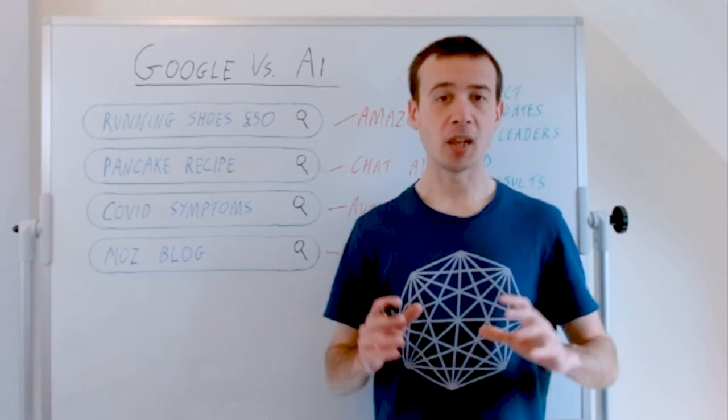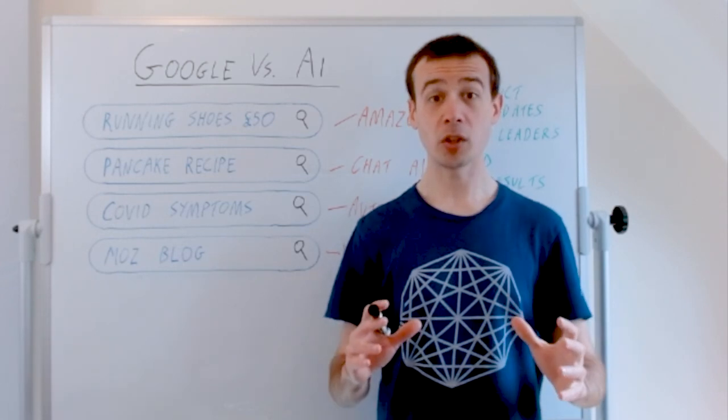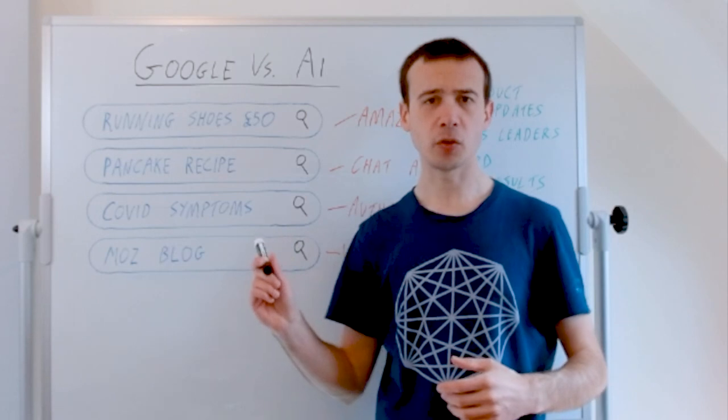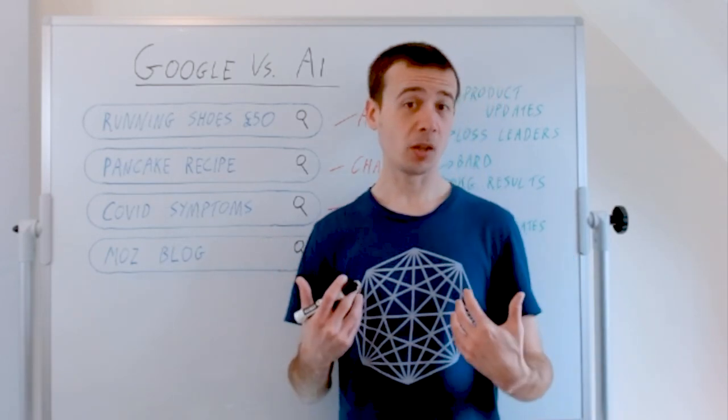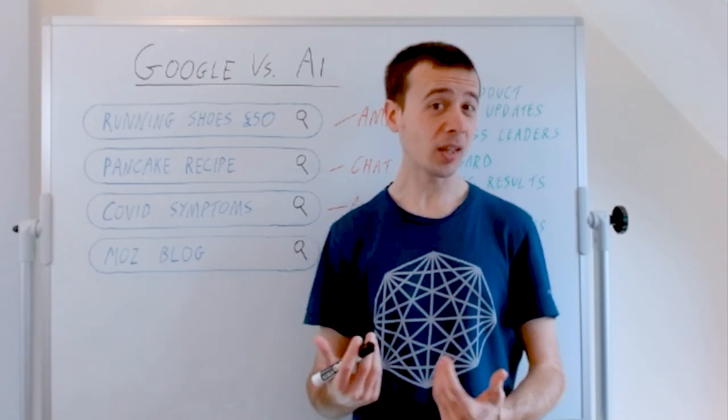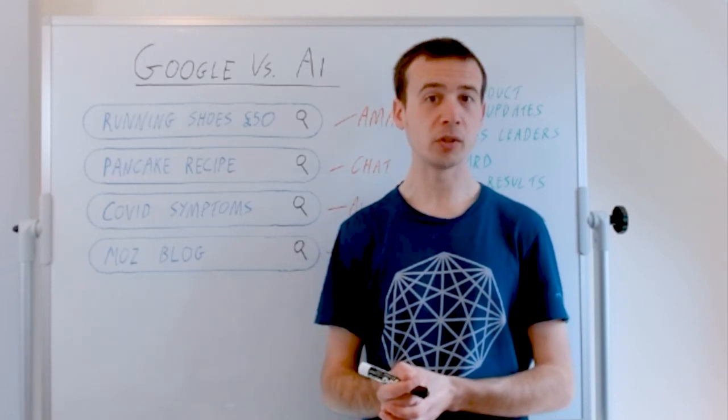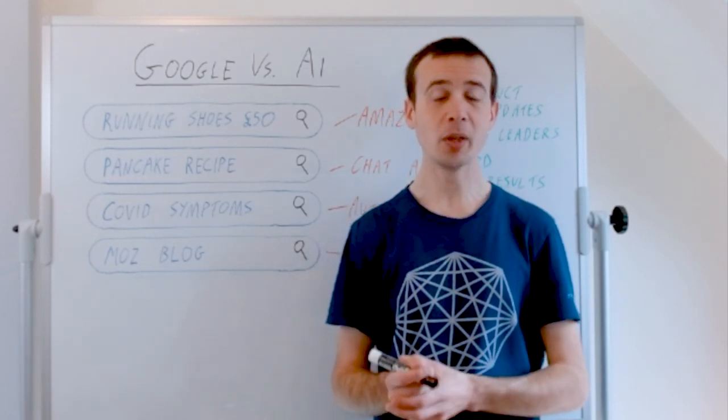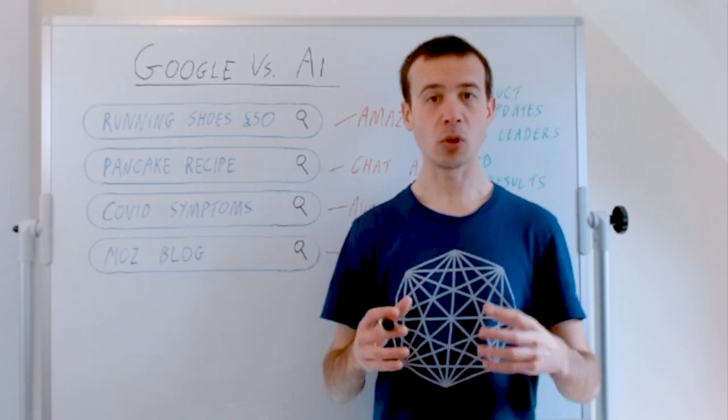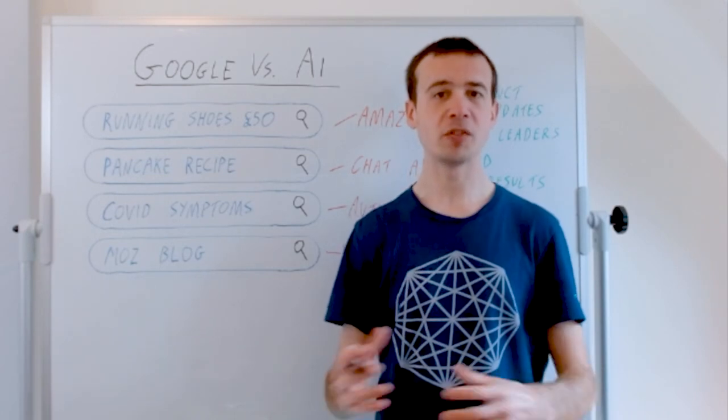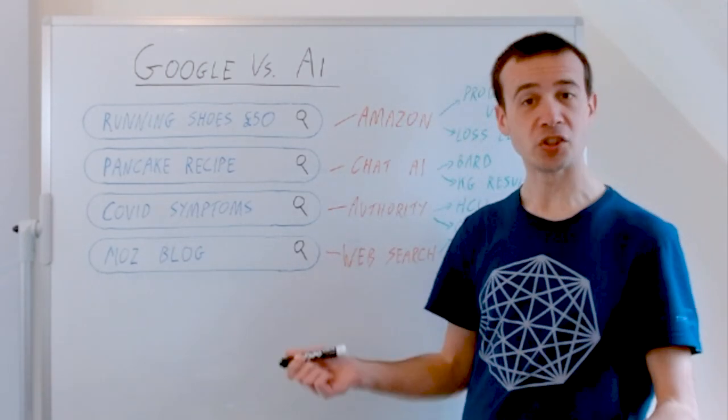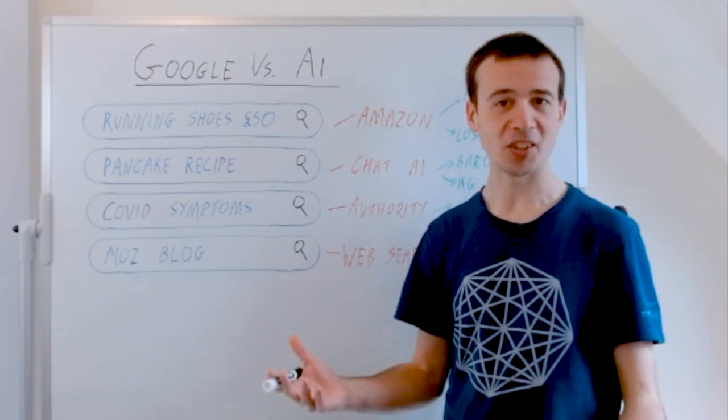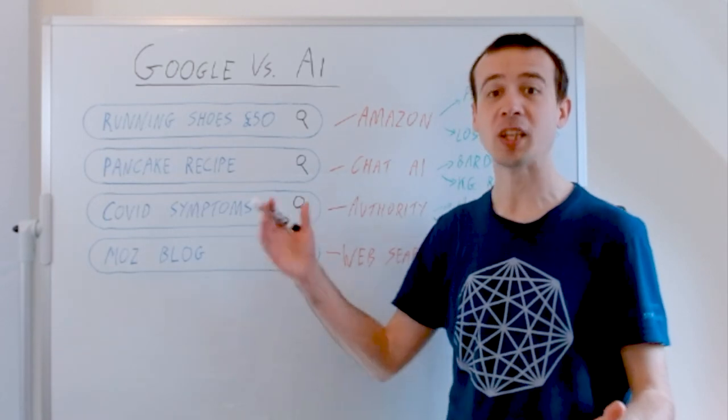Now, the lens I want to look at this through is thinking about some of the different kinds of queries that we currently use Google for. It's kind of an artifact of Google's dominance in the last decade or two that we use Google as the go-to tool for such a varied set of uses. I've got some example searches here—obviously this is just some random things that came into my head.